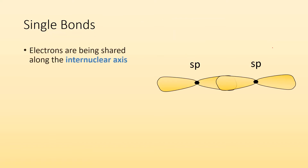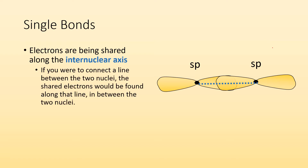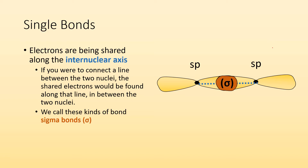So let's talk about single bonds. In single bonds, electrons are being shared along the internuclear axis. So if you drew a line that connects the two nuclei, we call that the internuclear axis. We call these kinds of bonds sigma bonds. So that overlap that's along that axis, directly in between the two nuclei, we call them sigma bonds.